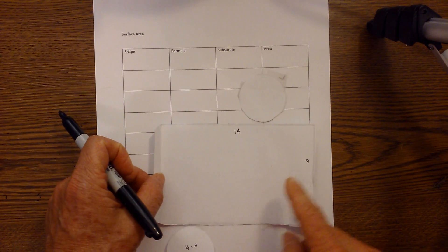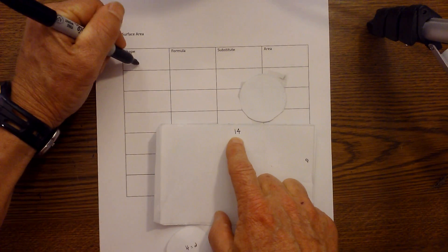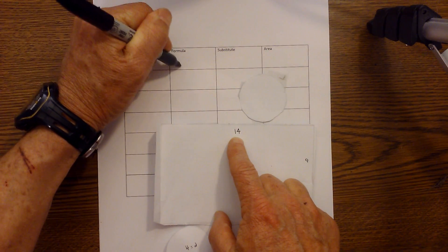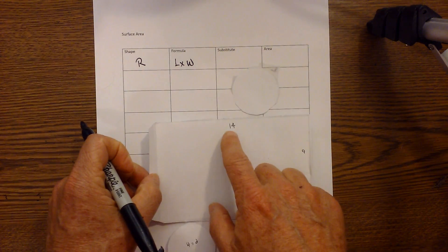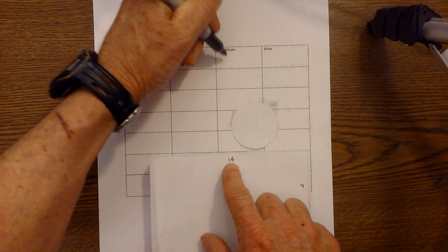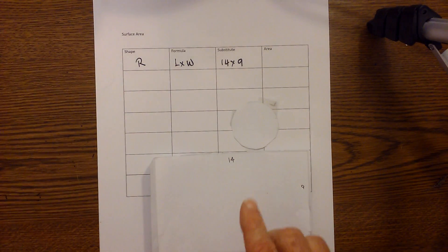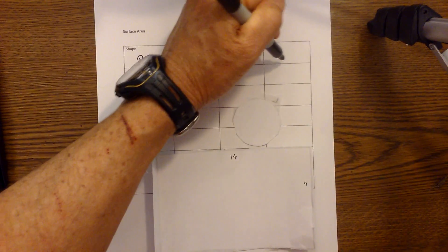So first we have this large rectangle and you can see I have the measurements. So first our shape is a rectangle, I'm gonna write R for rectangle. The formula is length times width or base times height, and then we're gonna substitute 14 times 9. I'm gonna get my handy calculator out to do this quickly and we go 14 times 9 that equals 126.